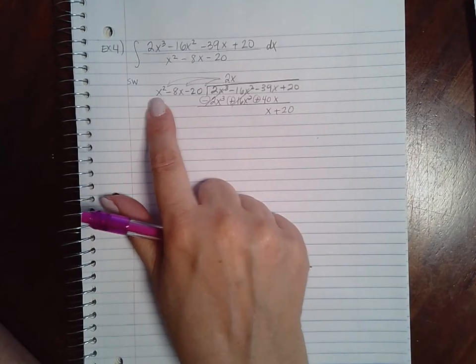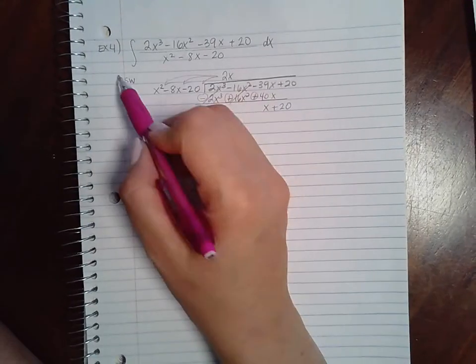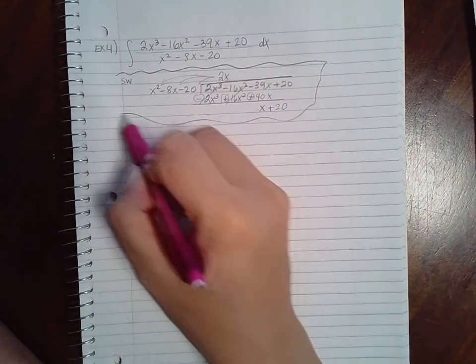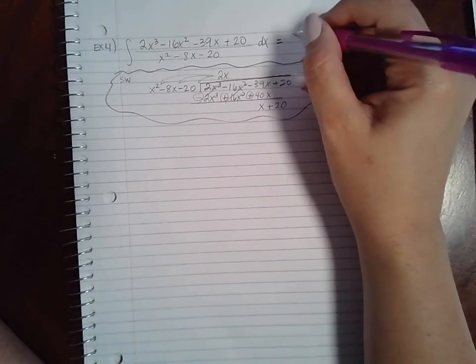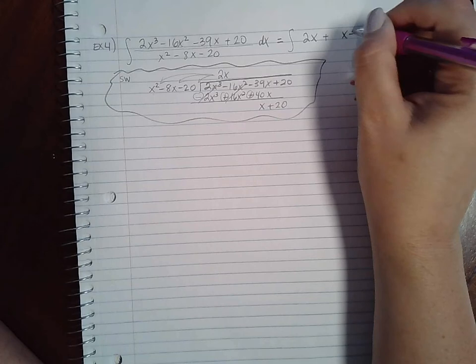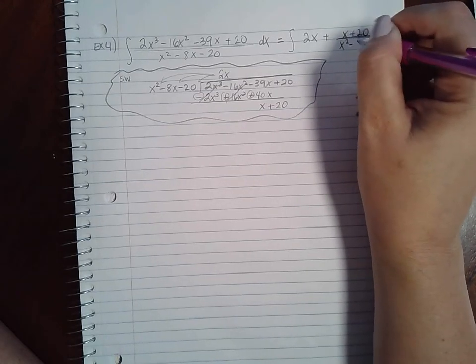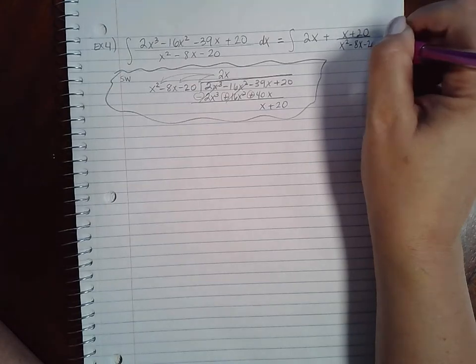Now this degree is higher, so I can't continue. We're going to stop. So what that means is that this fraction can be written as 2x plus x plus 20 over x squared minus 8x minus 20.